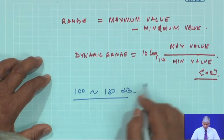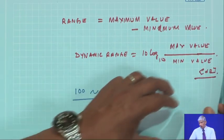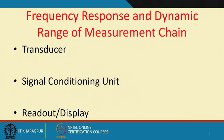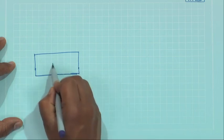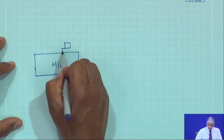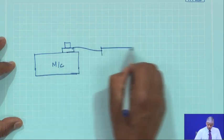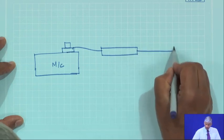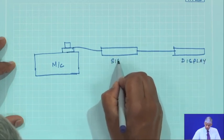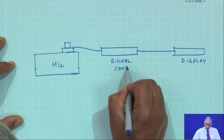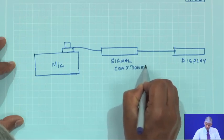When you talk about human hearing, the reference values are different. The dynamic range tells how large to how small a value you can measure. An important consideration in the measurement chain: when measuring from a machine, I put my transducer, but in between there is a signal conditioner and then a display.